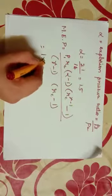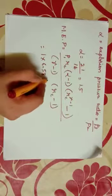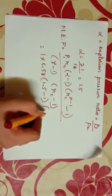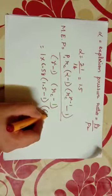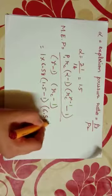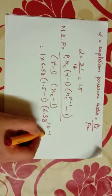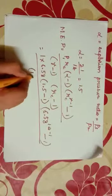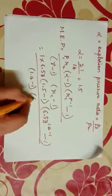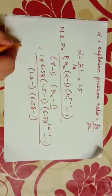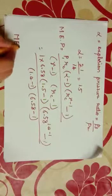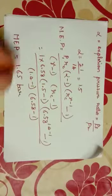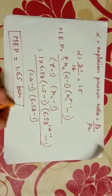1 into 6.58, 1.4 minus 1, minus 1, divided by 1.4 minus 1, divided by 6.58 minus 1. MEP will be 1.65 bar.